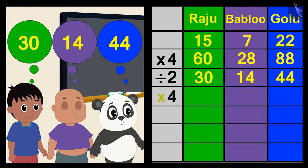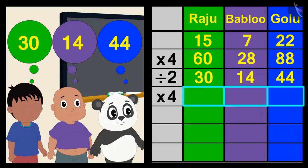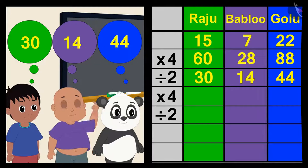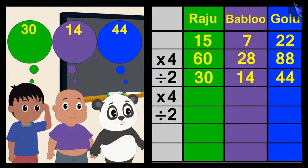Now multiply your answer once again by four and then divide that answer by two, Shere Khan said. The three friends multiplied their answer by four in this way and then divided the received answer by two.